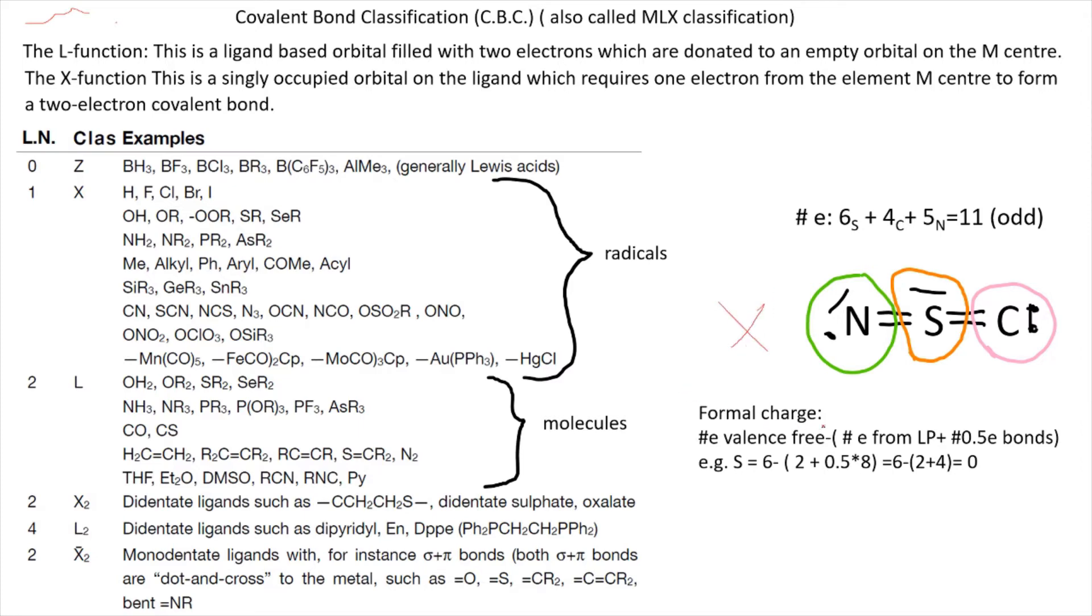Just to make sure that you know how to calculate formal charge, let's take sulfur. It has 6 electrons in a free valence, that's the number from the periodic table, minus number of electrons from lone pairs, that's 2, and then minus number of bonds, that is 4. So that gives you zero, which means sulfur has no formal charge on it.